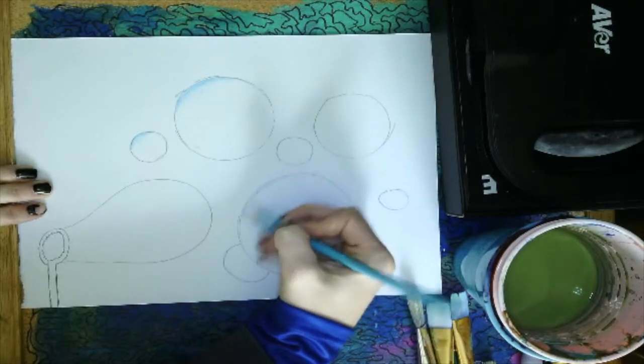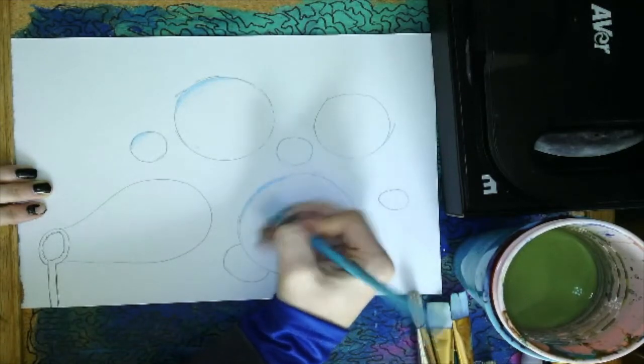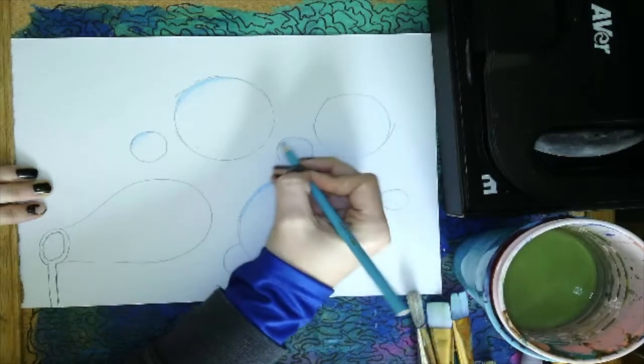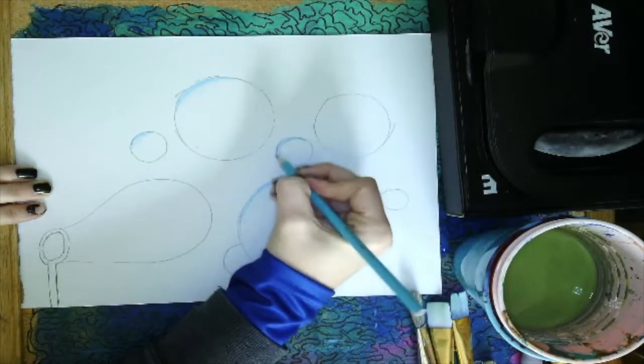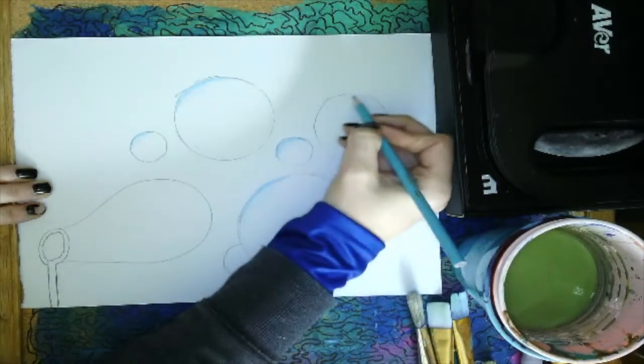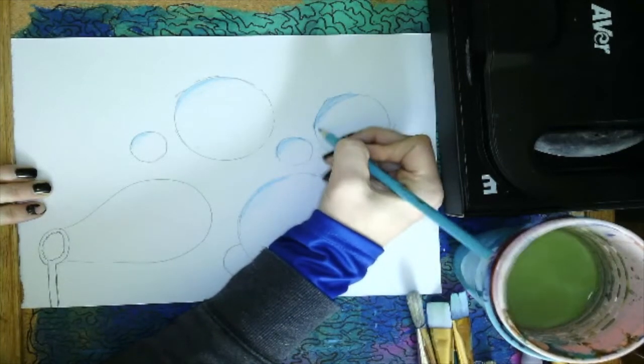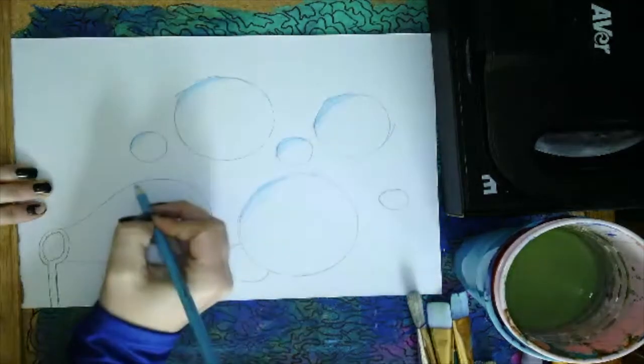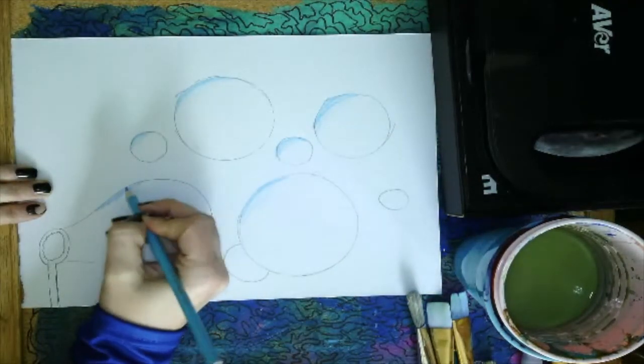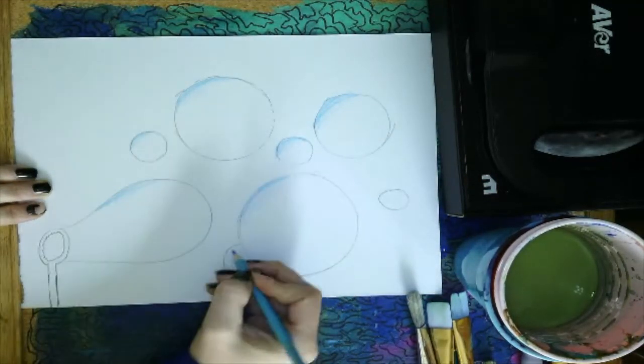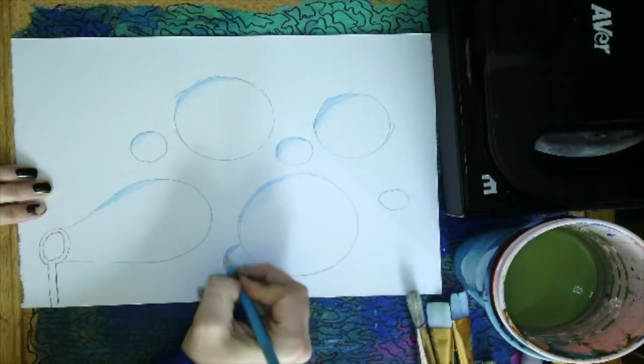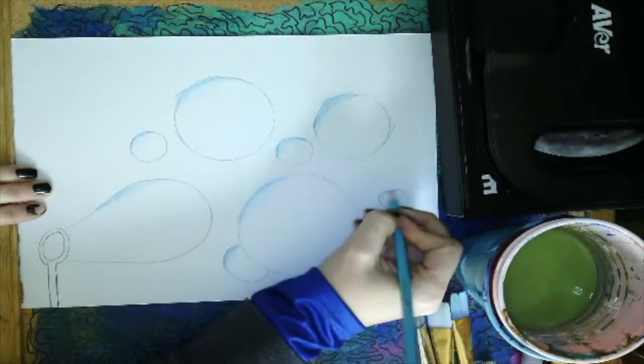I'm going to just try to do that on all my bubbles, and kind of the same spot. So I'm just adding some blue highlight on all my bubbles. And then I'm going to think, what other colors do I see when I look at a bubble? Because sometimes I think I see little rainbows in them.